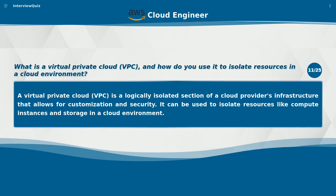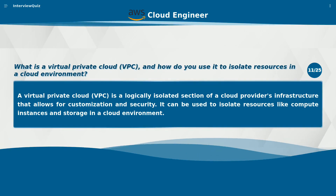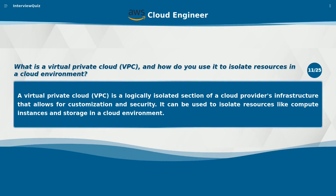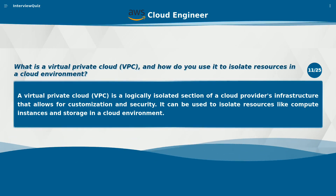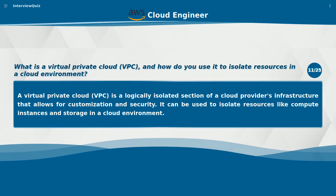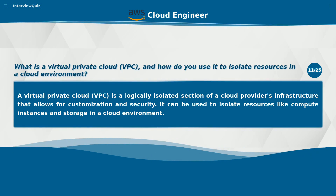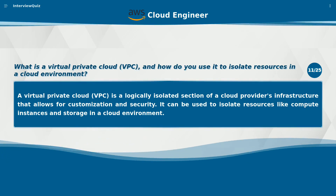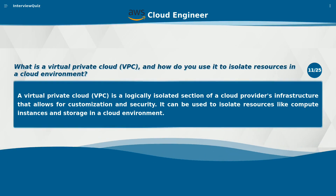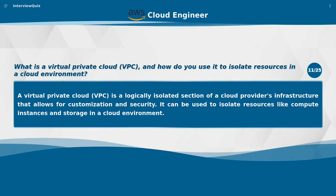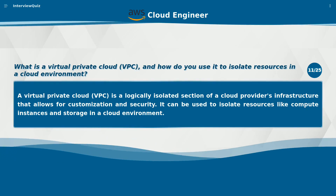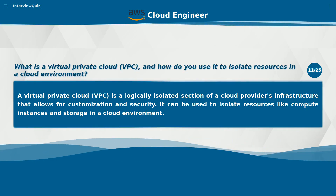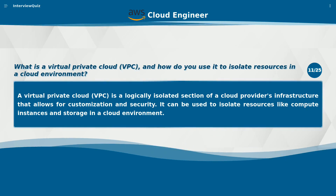What is a virtual private cloud (VPC) and how do you use it to isolate resources in a cloud environment? A virtual private cloud (VPC) is a logically isolated section of a cloud provider's infrastructure that allows for customization and security. It can be used to isolate resources like compute instances and storage in a cloud environment.